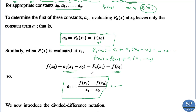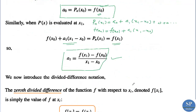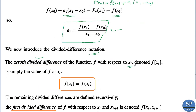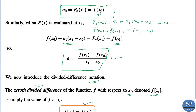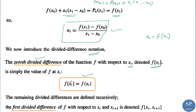In a similar way we can find a2, a3, etc. Now we introduce the divided difference notation. The 0th divided difference of the function f with respect to xi is denoted f[xi] and is simply the value of f at the point xi. So a0 = f(x0) is the 0th divided difference.